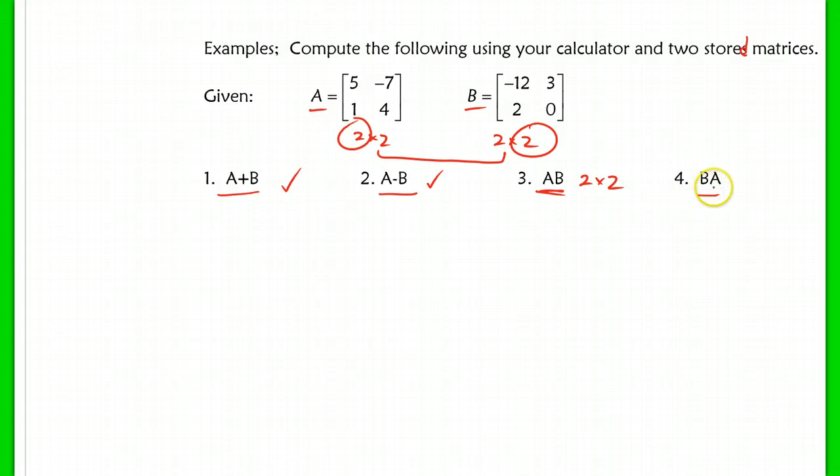The same thing goes for B times A. If we switch the order of this, this is matrix B, this is matrix A. We have the same two numbers and these outside numbers will give our dimensions. Okay, so always double check that you can do that before you even try to use your calculator.